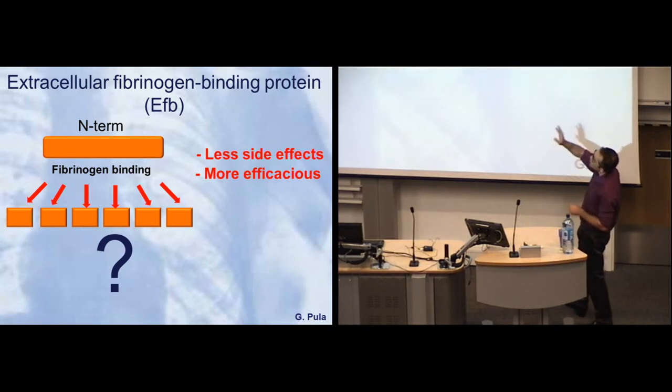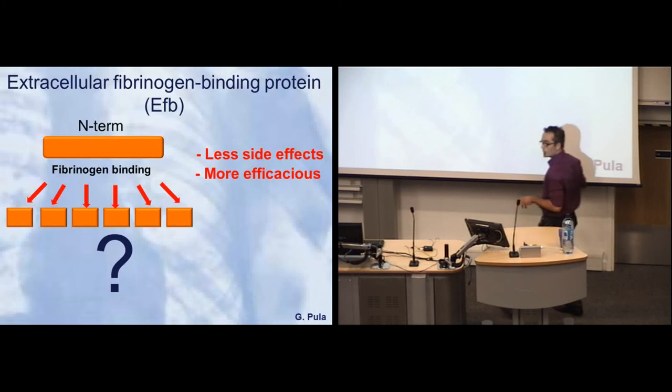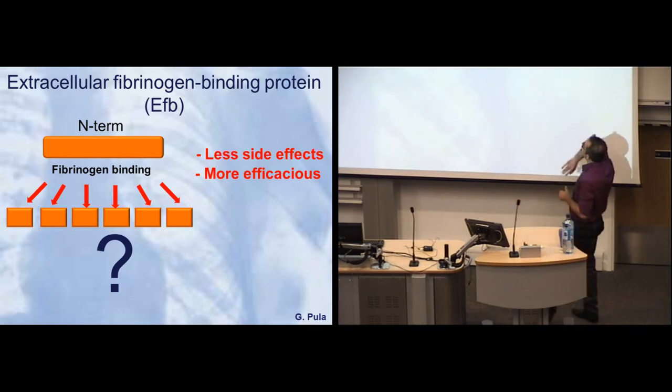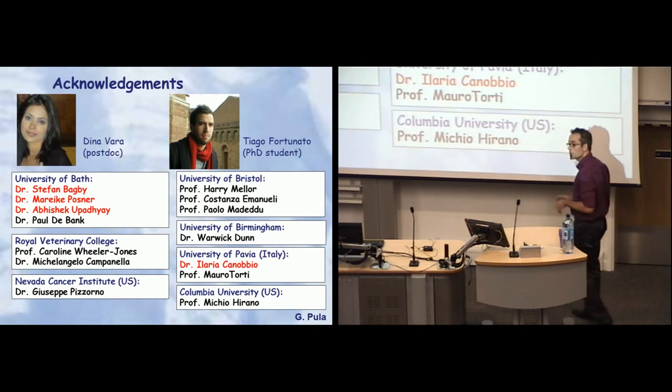What we are doing next is chopping the N-terminus further and testing the different fragments to identify exactly which portion of the protein is responsible for inhibiting platelets. We hope to make it into an anti-platelet drug with less side effects because it's smaller and with better pharmacology because it will be more efficient in its administration.